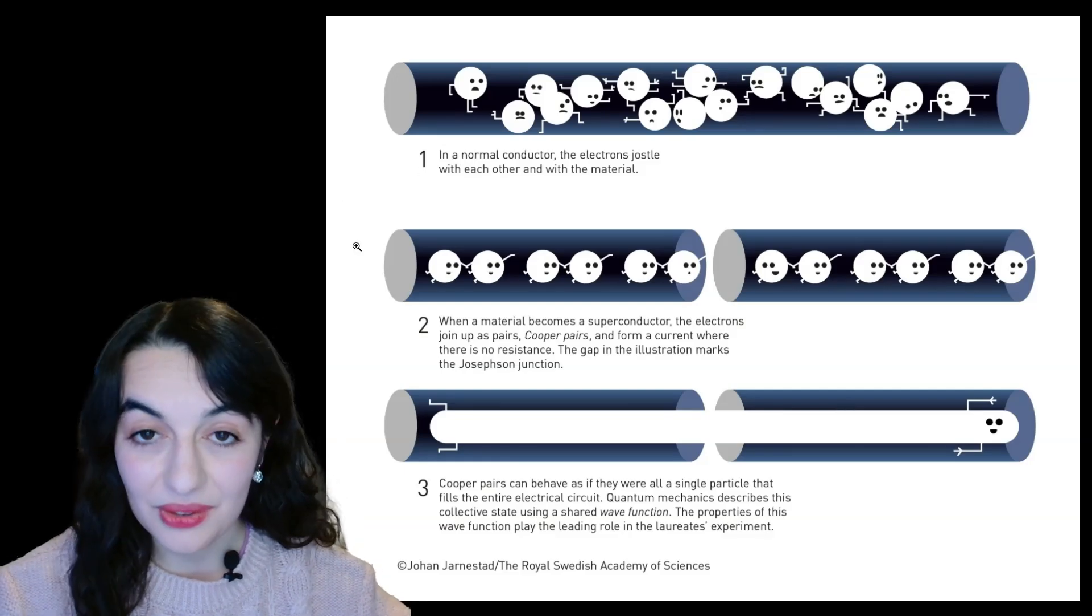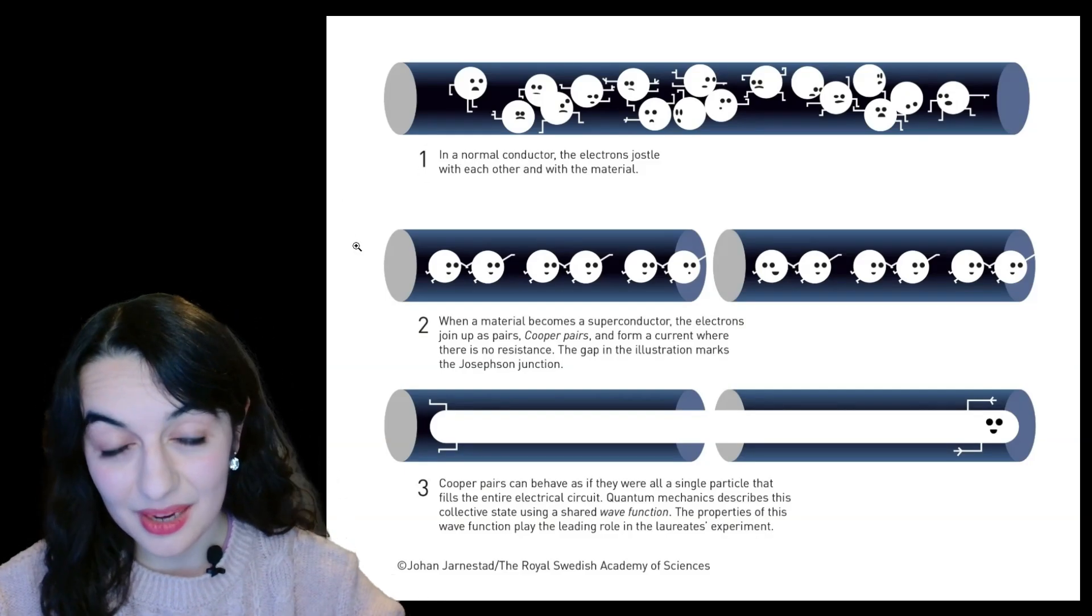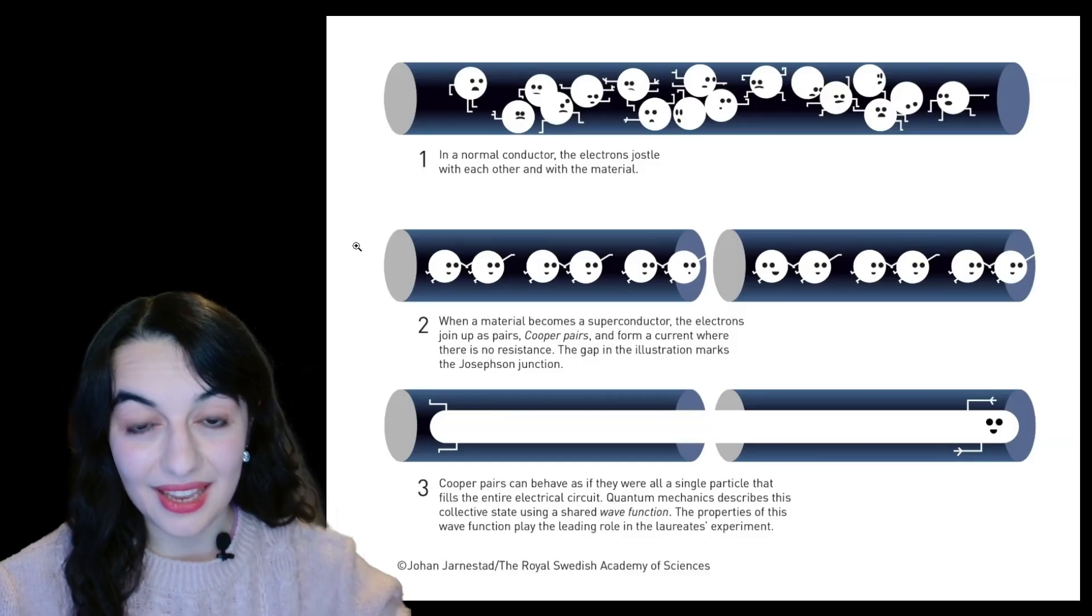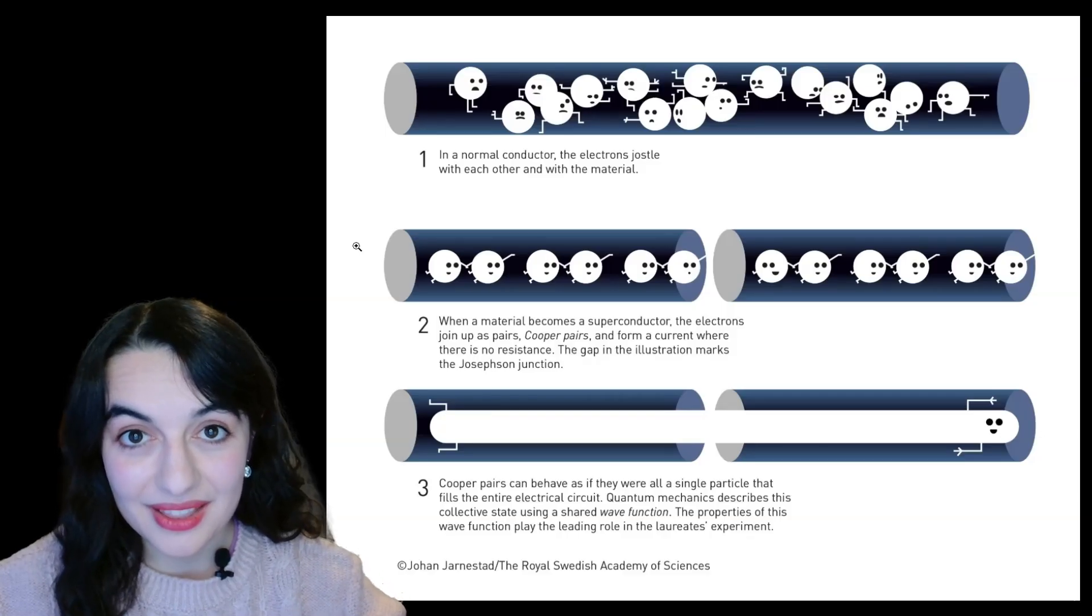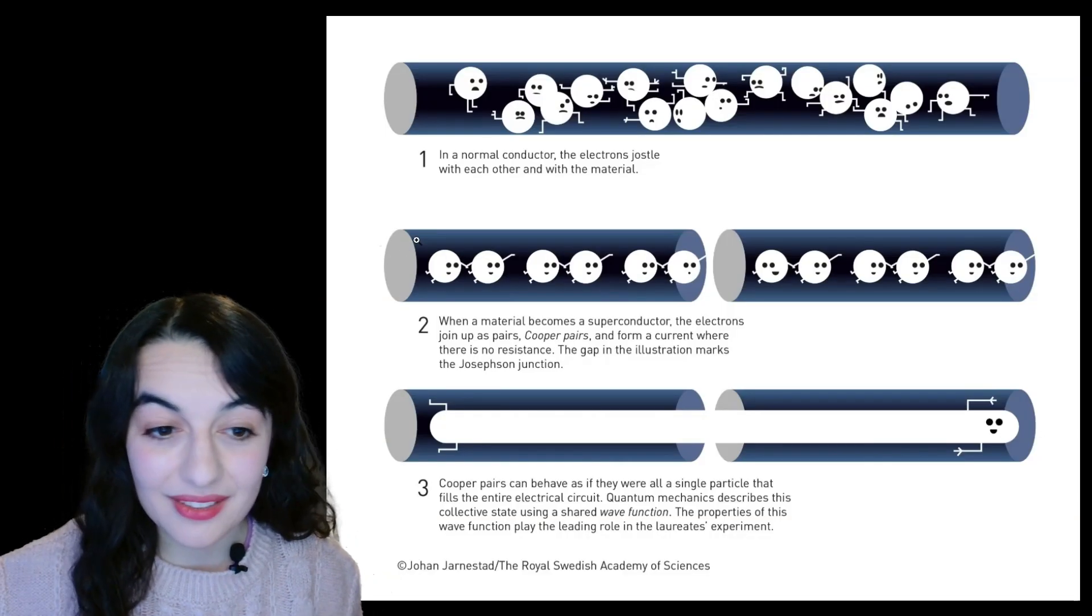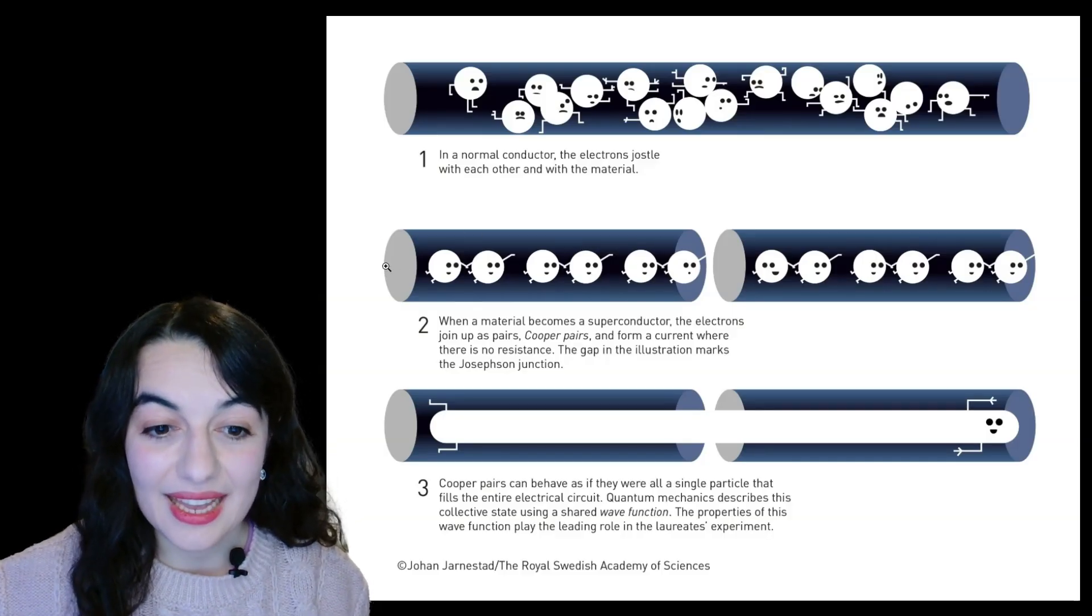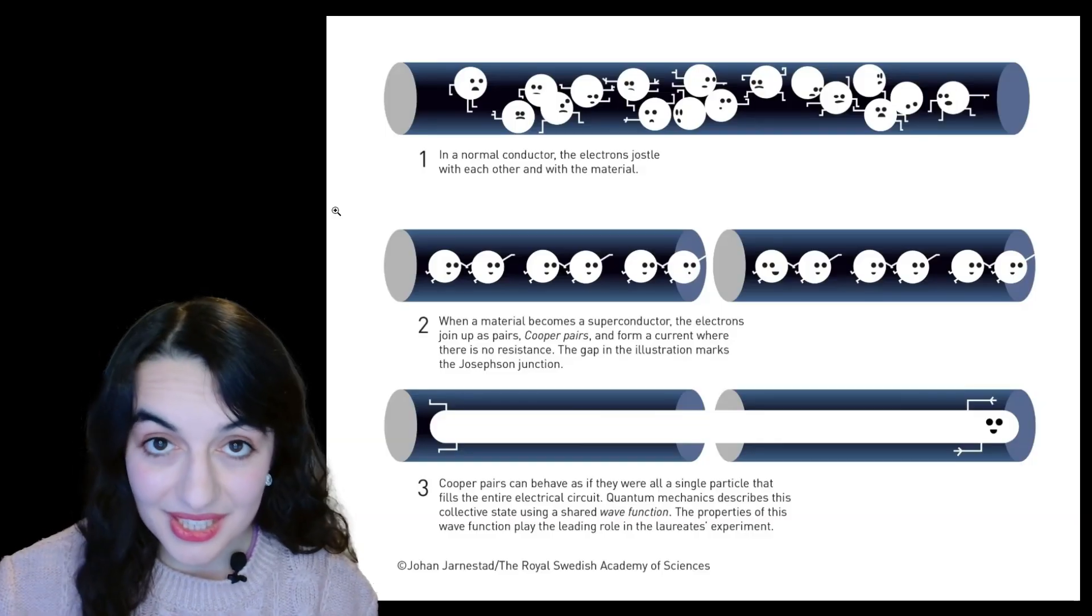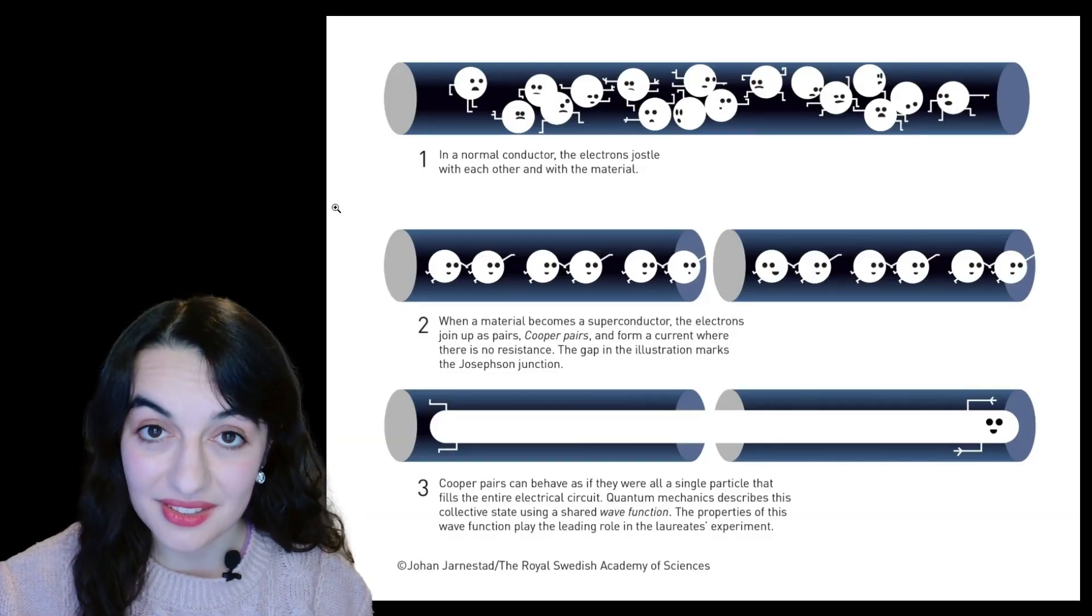When a material is superconducting, what it means is that if you reduce its temperature below a certain temperature, then it starts to behave in a different way. It becomes superconducting. And the mechanism behind this is that the electrons pair up. These are called Cooper pairs, which is what's demonstrated here in the picture. And then the material behaves in this superconducting way, which means that there's a current without any resistance to that current.